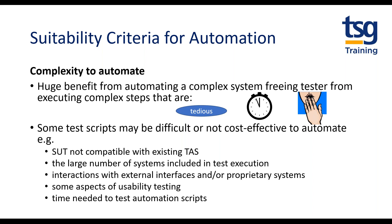Manual testing relies on competent, experienced testers bringing their knowledge to the manual test script. How easy will it be to automate those scripts? It may be very complex. Repeatedly executing scripts for testers is tedious and time-consuming, and people make mistakes. However, the scripts might be complex to automate to the point that some scripts might not be cost effective to automate — maybe the SUT isn't compatible with existing TAS, or due to a large number of systems, interactions, interfaces, external systems, or aspects of usability testing. Don't forget the time needed to test the automation test scripts themselves.